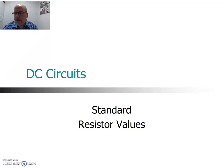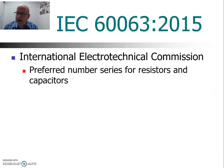Have you ever gone into the lab and wondered where there are seemingly random values for the resistors that come from? It turns out they're not random after all. They are set by an international body called the International Electrotechnical Commission, and they set up what is called the preferred number series.